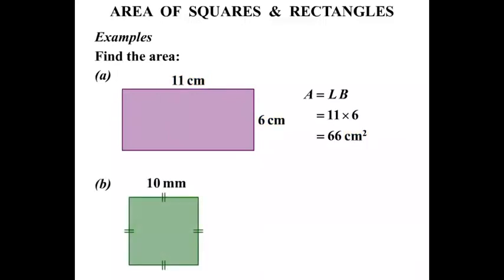The next one, we've got a square. A equals LB, so we still use the same formula. Now, we know that one of the sides is 10 mm. Then the other side, of course, would also be 10 mm. It's a square. So when we talk about length and breadth, it's going to be 10 by 10.